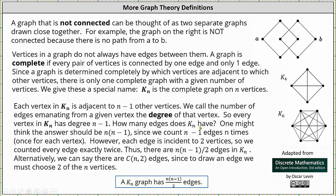How many edges does K_n have? One might think the answer should be n times the quantity n minus one, since we count n minus one edges n times once for each vertex. However, each edge is incident to two vertices. So we count every edge exactly twice. Thus, there are the product of n and n minus one divided by two edges in K_n.